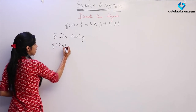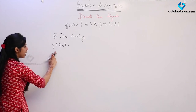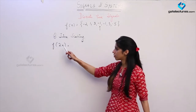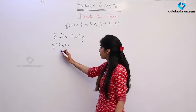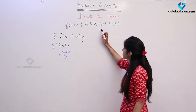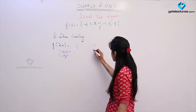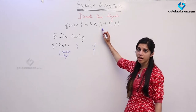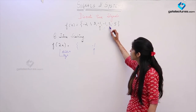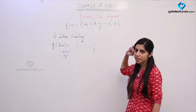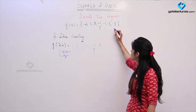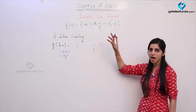Considering the same example, let us look at time compression first — finding F(2n). We divide all n values by 2. The sample at n equals 0 remains as it is. The sample at n equals 1 would move to n equals 1/2 — not allowed, so it is lost. The sample at n equals 2 moves to n equals 1, so the next sample is 5. The sample at n equals 3 would go to 3/2 — not allowed. On the negative side, the sample at n equals minus 1 would go to minus 1/2 — lost. The sample at n equals minus 2 moves to minus 1. So two samples are lost from each side.